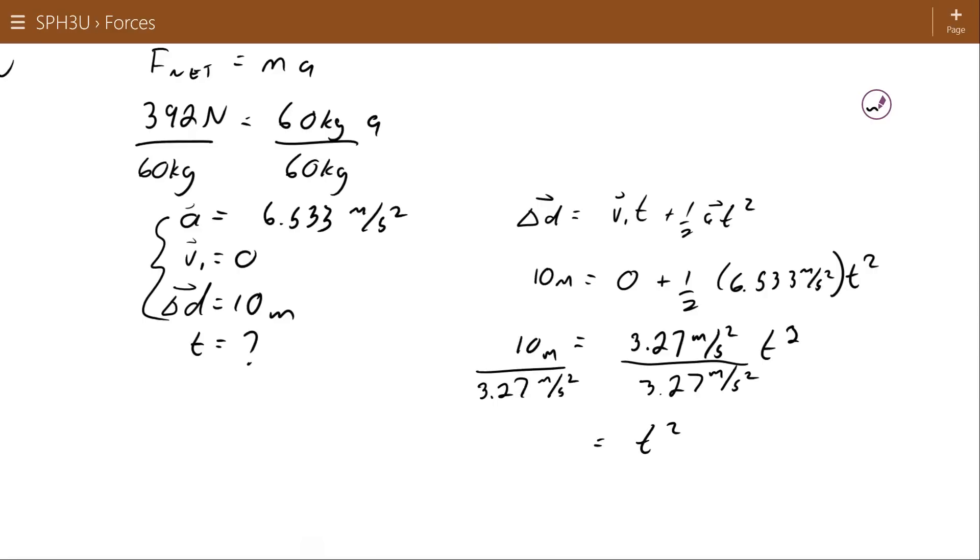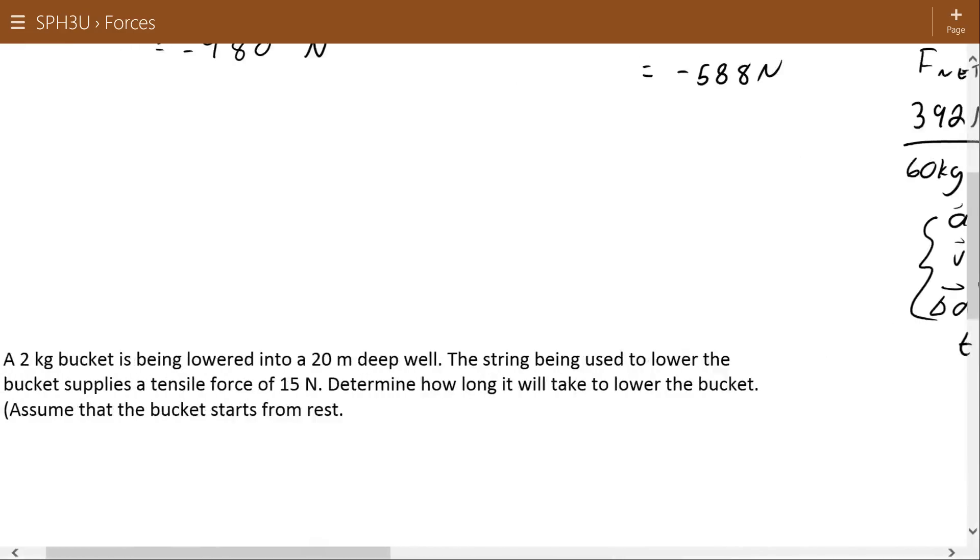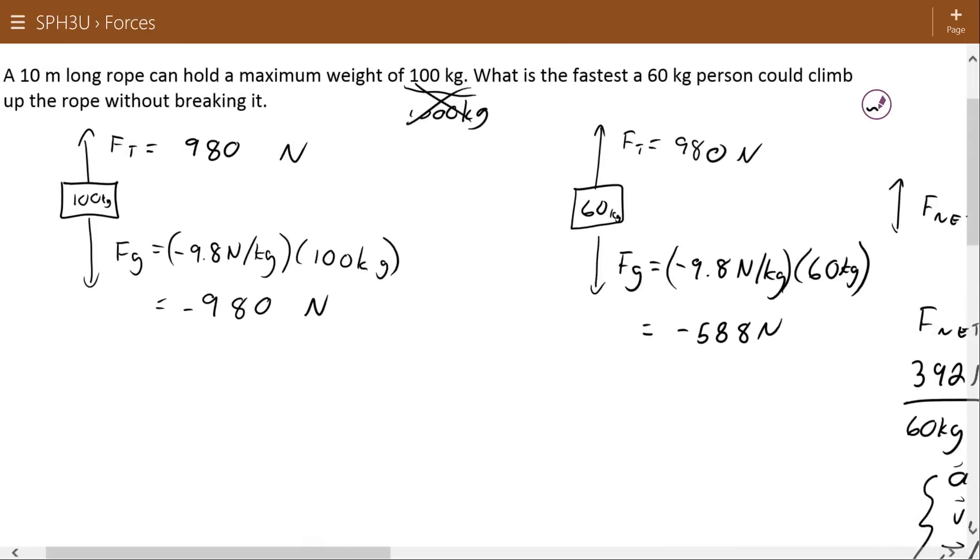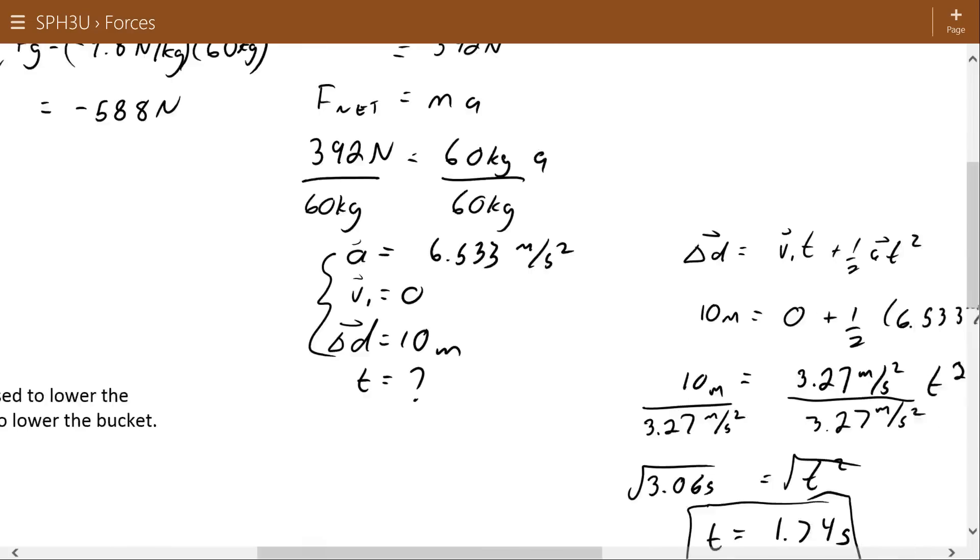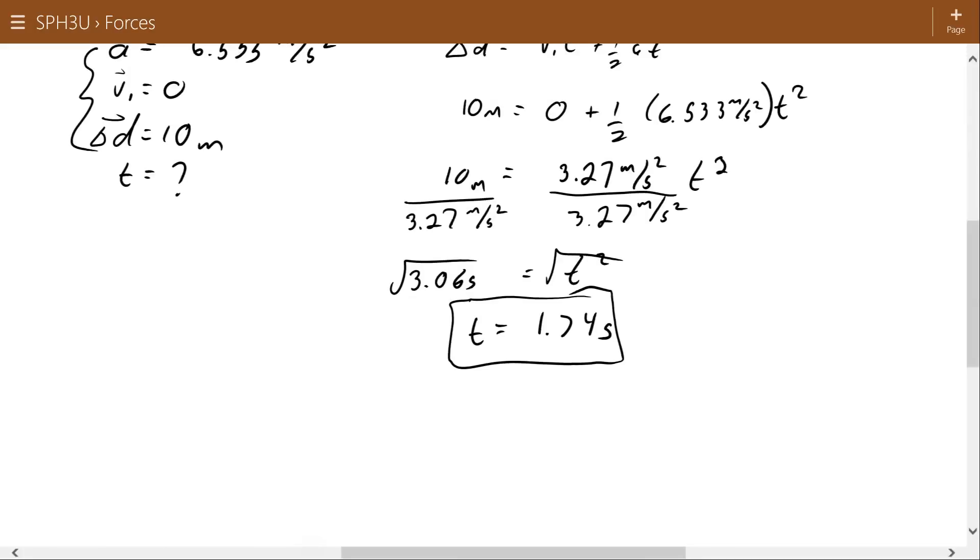Square rooting both sides, and I get a t of 1.74 seconds. Again, when I square root I get a positive and negative root, but since this is time and we're assuming that time is moving forward, we're going to use the positive root of t equals 1.74 seconds. A quick review here: if it can support that much weight, it must be able to supply that force. If we can supply that force, it can supply that net force leading to that acceleration. That's how fast you accelerate, that's how long it takes you to cover the ten meters.